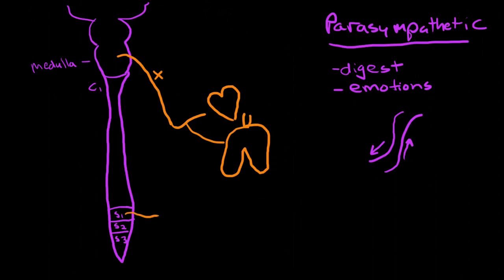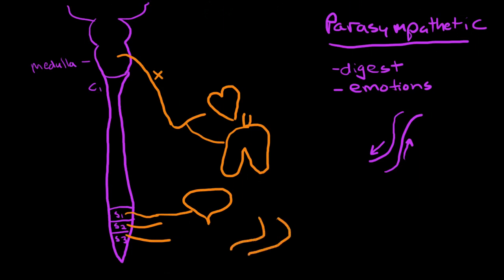Notably, nerves S1 through S3 innervate the bladder, the rectum, and the external genitalia.